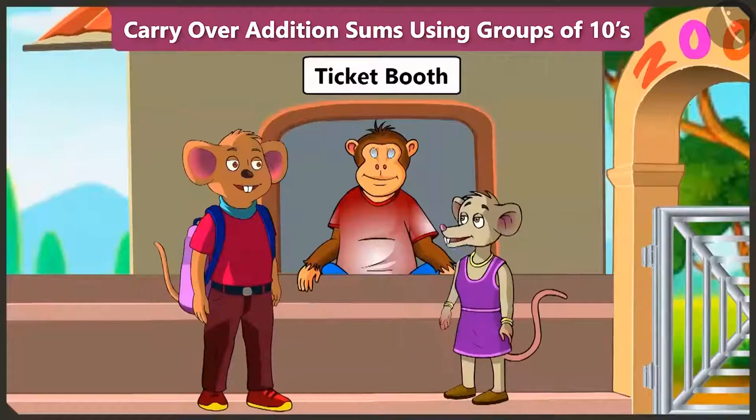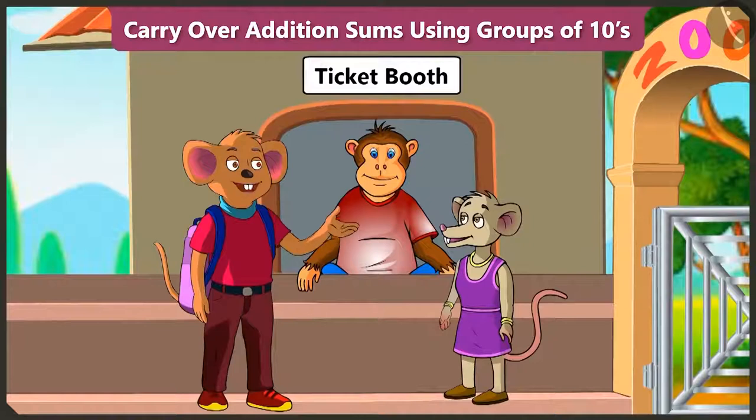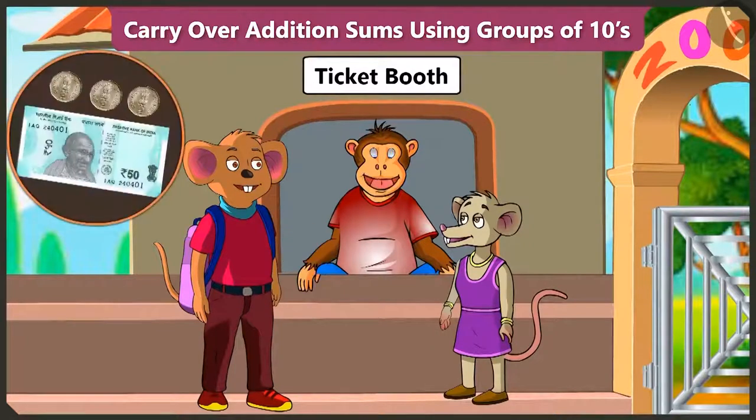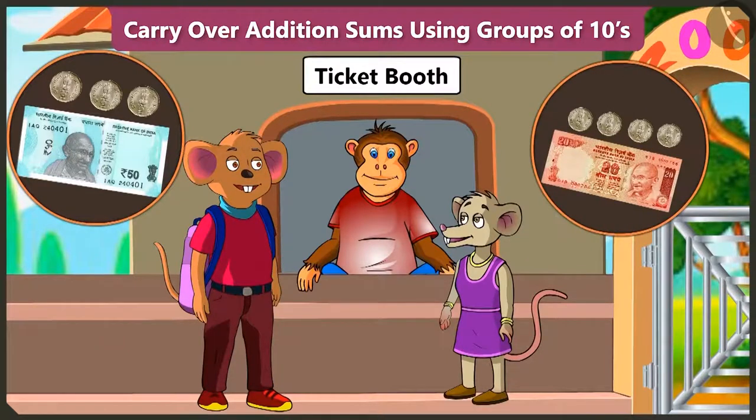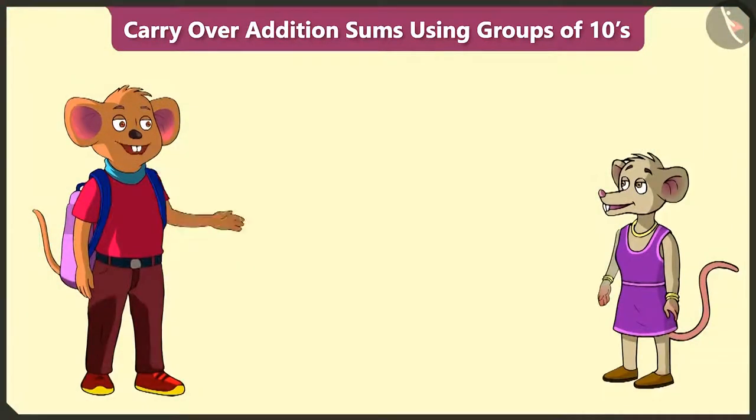Do we have to buy a ticket here also? Yes. Bhaiya, please give us 2 tickets. Your ticket will cost 56 rupees. And the younger child's ticket will cost 28 rupees. Chichi, now tell me how much money do we have to pay in total?